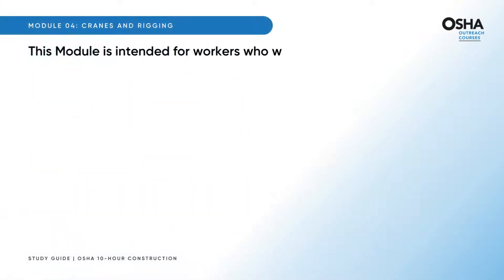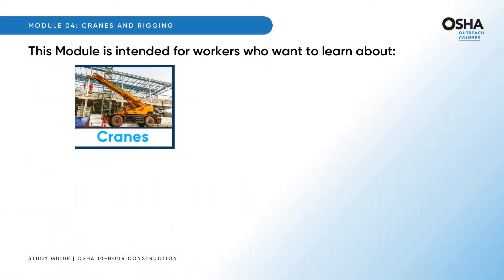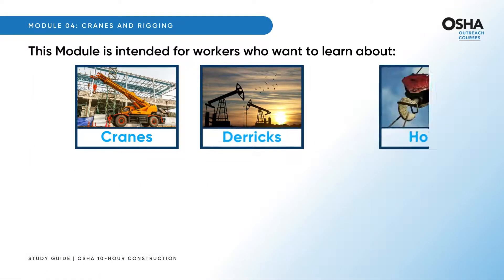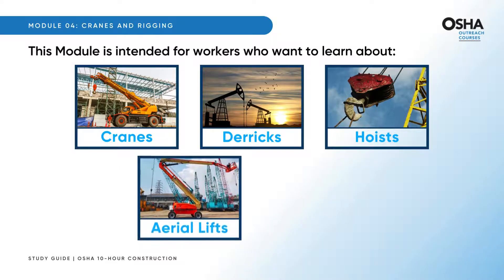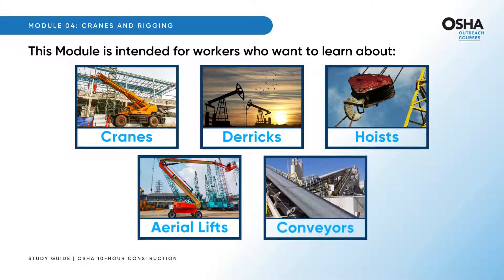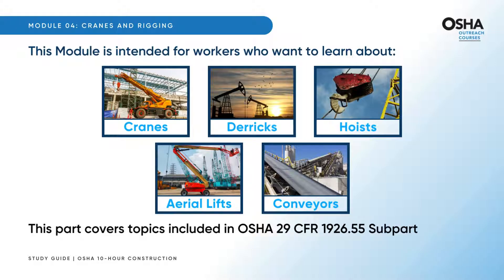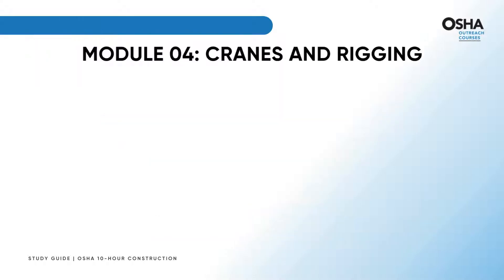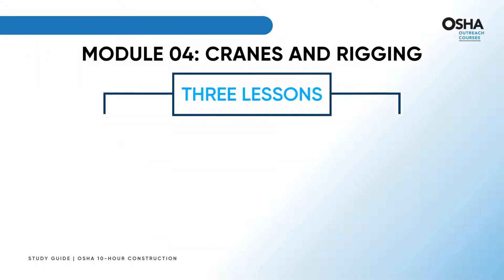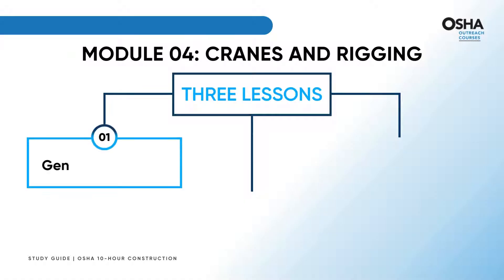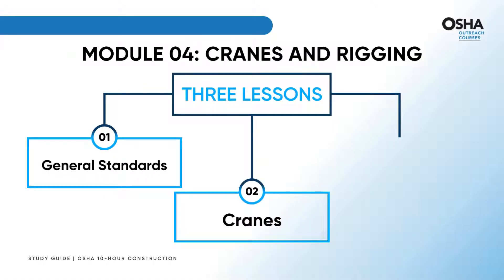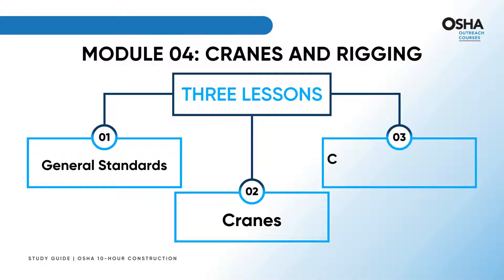This module is intended for workers who want to learn about cranes, derricks, hoists, aerial lifts, and conveyors. This part covers topics included in OSHA 29 CFR 1926.55 subpart N. This module is comprised of the following three lessons: first, general standards; second, cranes; third, cranes — the personnel platform and rigging.